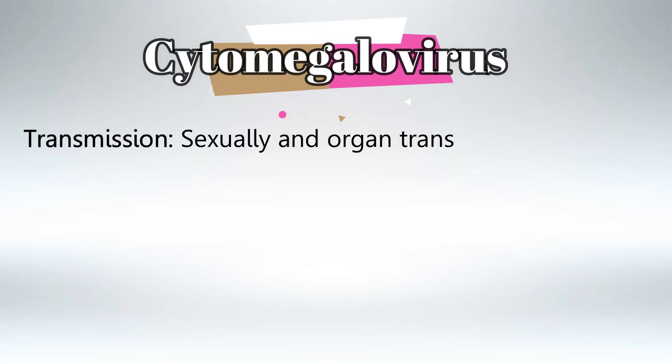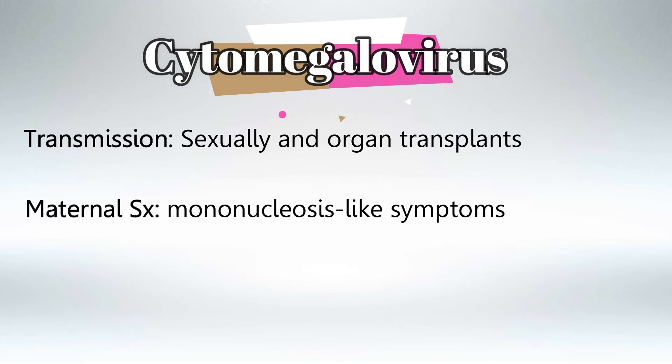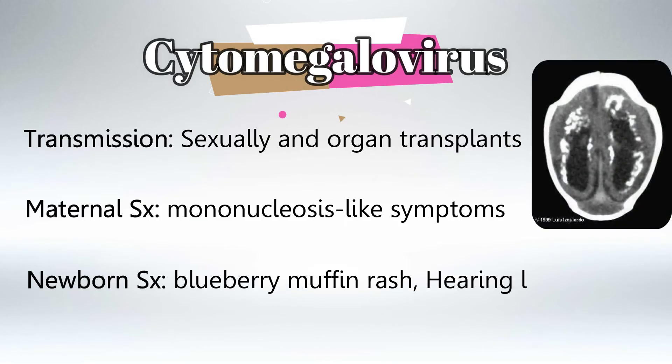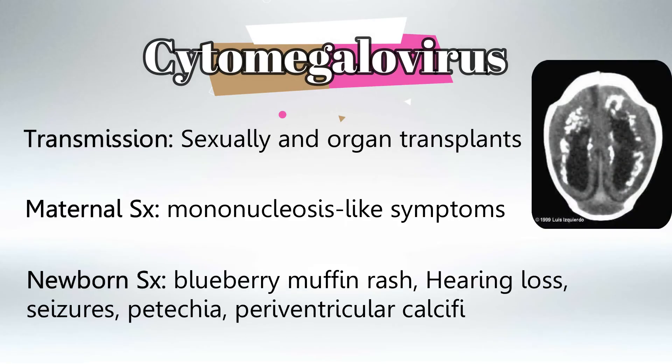C stands for cytomegalovirus, which is herpes number five, and it transmits via a variety of routes, mainly sexually and organ transplant. Maternal symptoms are mononucleosis-like symptoms, and the newborn would have the classic blueberry muffin rash, hearing loss, seizures, petechiae, and periventricular calcifications.